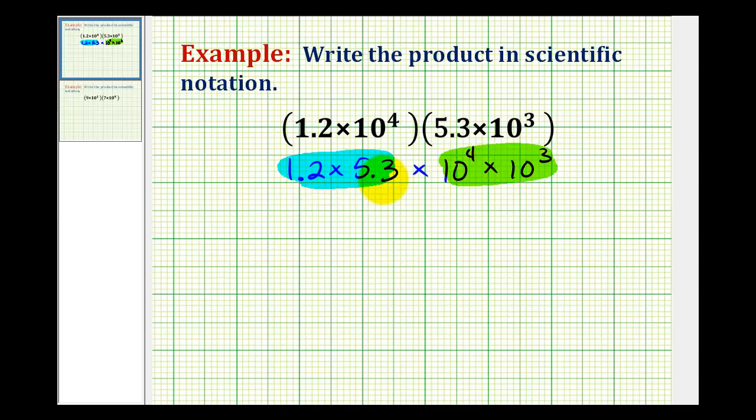Remember to multiply decimals, we first determine the total number of decimal places. So this has one decimal place to the right of the decimal and this has one. Therefore, our product must contain two decimal places to the right of the decimal. So now that we know that, we can go ahead and just determine the product of 12 and 53.